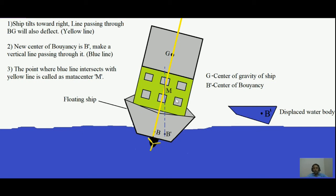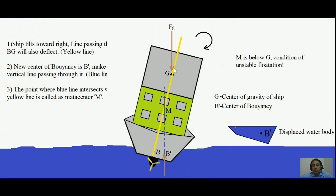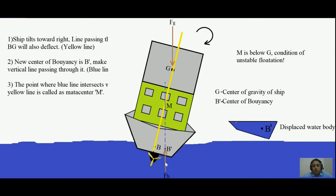When M is below G, the ship will no longer be corrected to regain its stable initial orientation. We can understand this from the force diagram: FG is the gravitational force applied on G downward, and FB is the buoyant force acting upward from the bottom. FG is to the right-hand side of FB, so these forces constitute a couple in the clockwise direction, tending to rotate the ship clockwise. So the ship will overturn, because the metacenter is below the center of gravity.